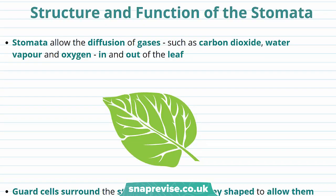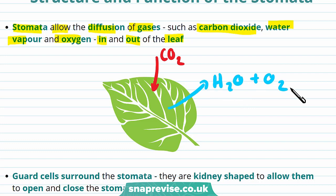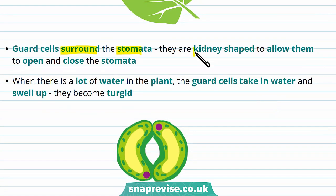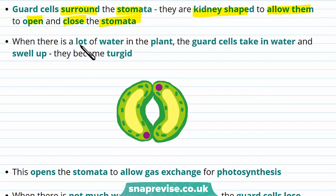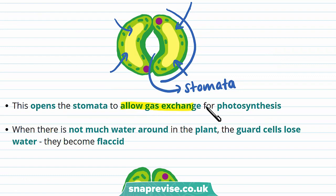Now let's talk about the structure and function of the stomata. The stomata allow the diffusion of gases — including carbon dioxide, water vapour, and oxygen — in and out of the leaf. CO2 diffuses into the leaf, and water and oxygen diffuse out. Stomata have guard cells to allow gas exchange; these guard cells surround the stomata and are kidney-shaped, allowing them to open and close it. When there is a loss of water in the plant, the guard cells take in water, swell up, and become turgid. As water moves into the cells through osmosis, the cells become bent, creating a small hole called a stoma (singular) or stomata (plural). This opening allows gas exchange for photosynthesis.